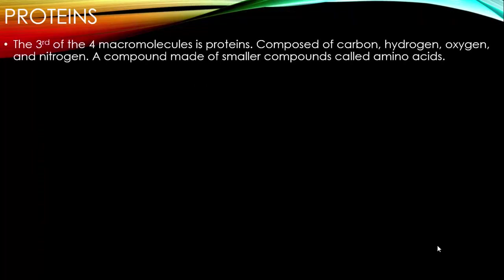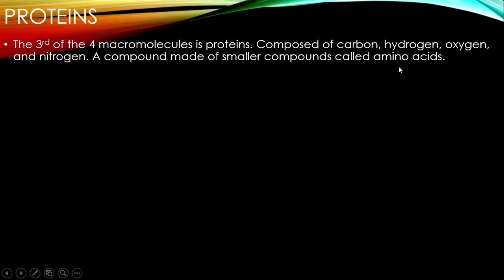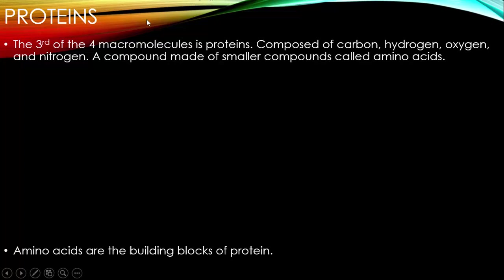The third of the four macromolecules is proteins. They're composed of carbon, hydrogen, and oxygen, but have one more thing that carbohydrates and lipids do not — nitrogen. So we have carbon, hydrogen, and oxygen, and we tack on nitrogen, and that makes it a protein. A compound made of smaller compounds is called amino acids. Amino acids are the building blocks of proteins, and proteins are the building blocks of life.